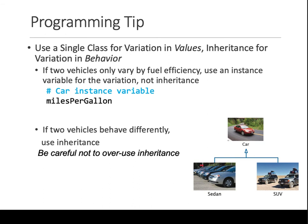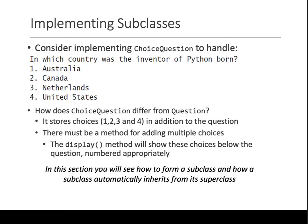You'd have a Student class, and both Undergrad and Grad inherit from it. Similarly, miles per gallon is only a variation in value, so it should be part of the class, not a reason for inheritance. The last important point: do not overuse inheritance, especially as beginning programmers — you'll fall into trouble with that.